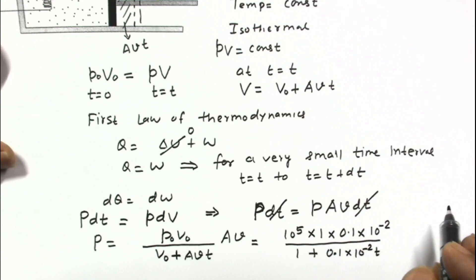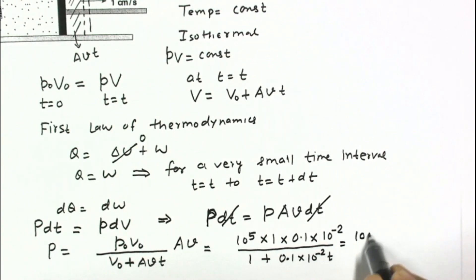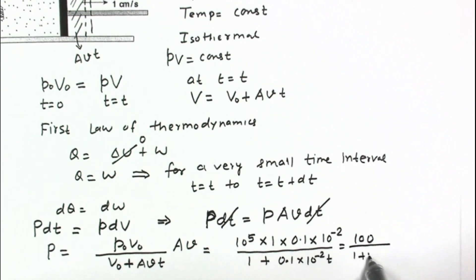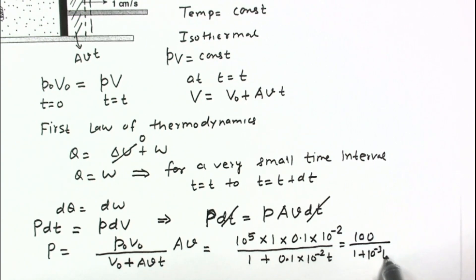So final answer for this problem will be 100 divided by 1 plus 10^-3 into T. So this is the final answer to this problem.